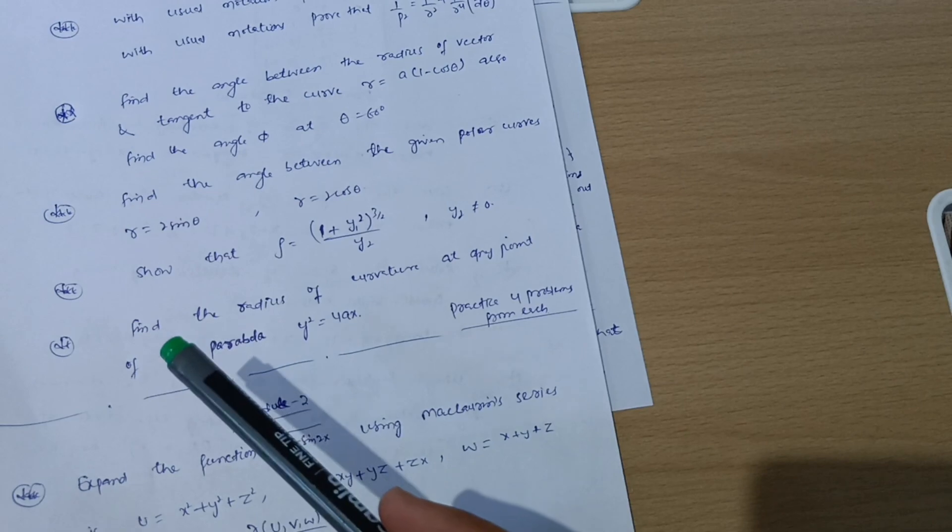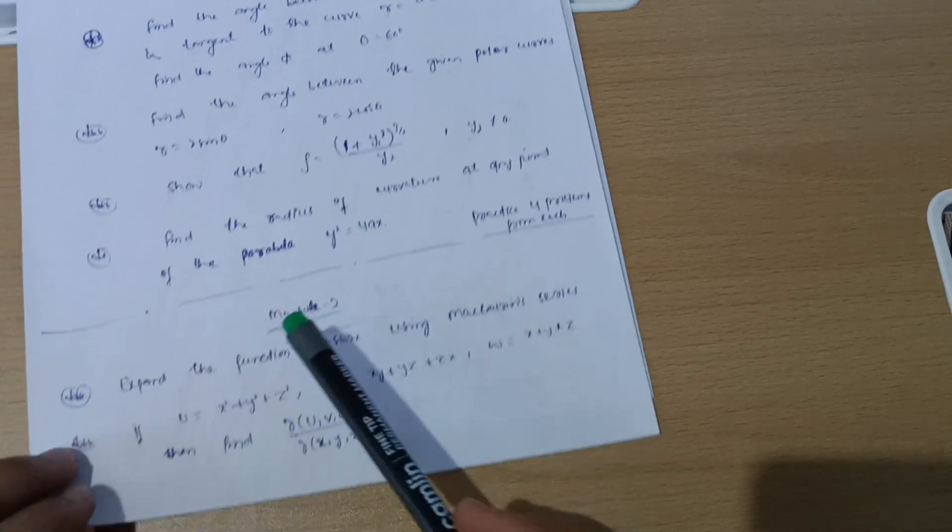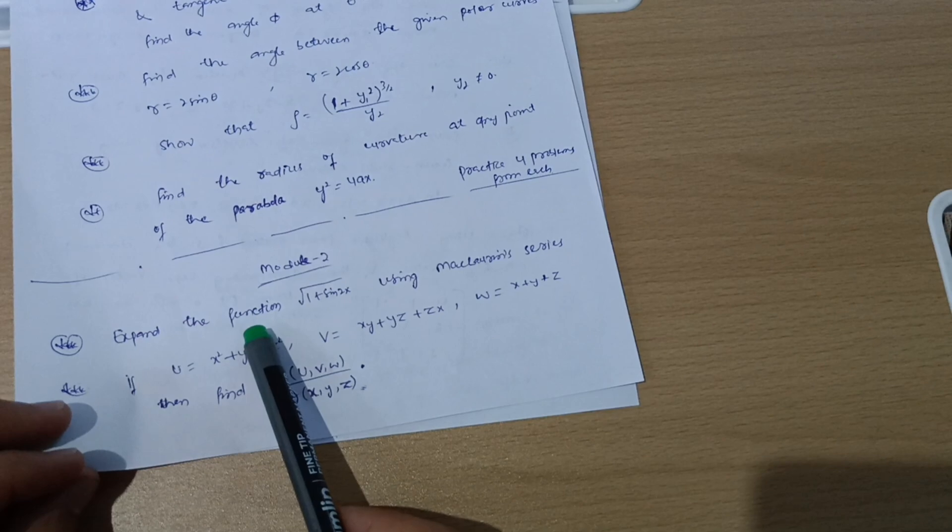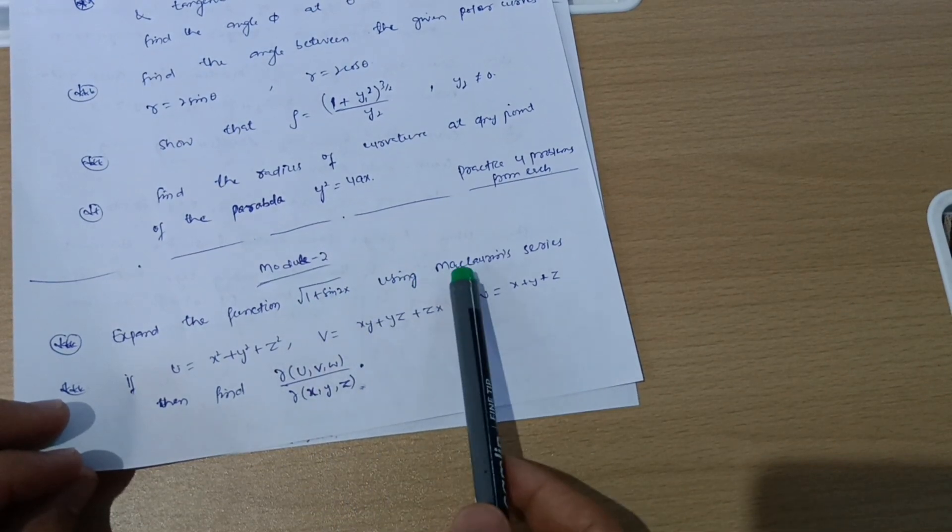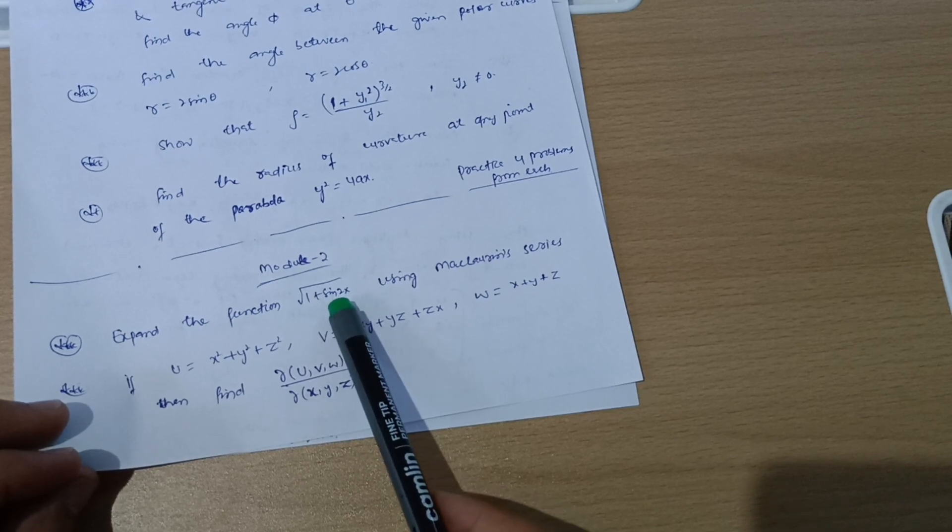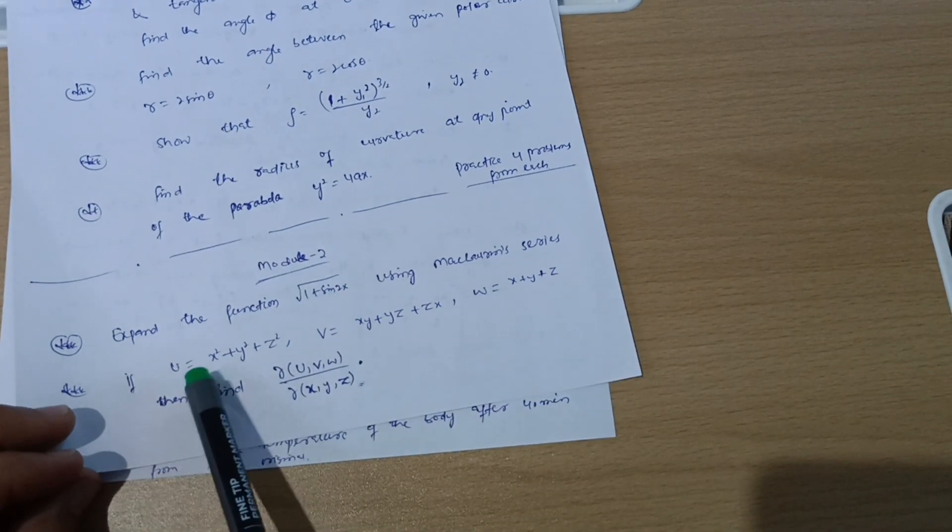Make sure you will go through three to four problems. Next we have Module 2. Expand the function √(1 + sin 2x) using Maclaurin series. This is a super important question. Other questions are also there, so go through notes and you will avail all the important questions.